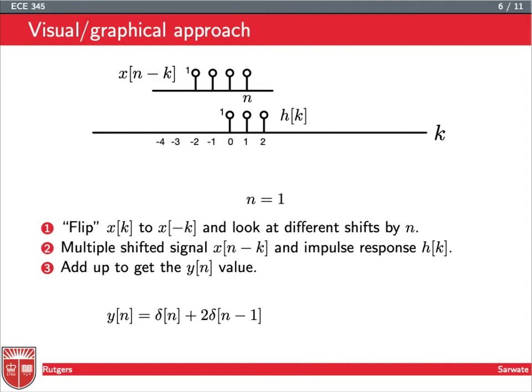If I want to look at the output at time 1, I have to slide x[n-k] forward by 1, so now n is equal to 1. Now there's two points of overlap. So I'm going to get 2δ[n-1], because I'm looking at the output at time 1. I'm getting 1 times 1 plus 1 times 1, which gives me 2.